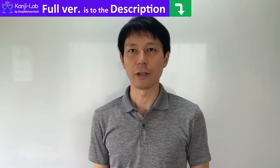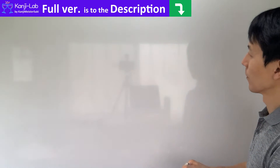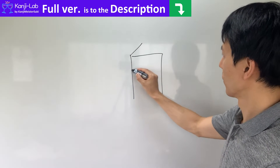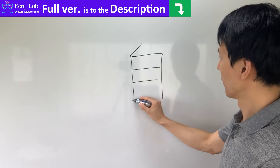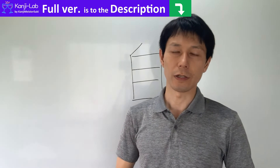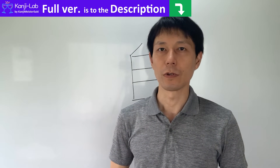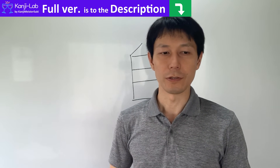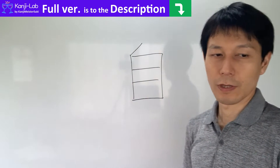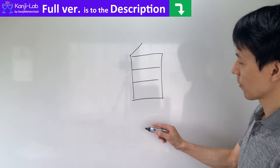Hi, this is Suki. In this time, I will introduce the kanji radical MISUKARA. This program provides explanations of Japanese kanji characters for those who are learning Japanese. Let's start with learning readings. Its reading is MISUKARA.